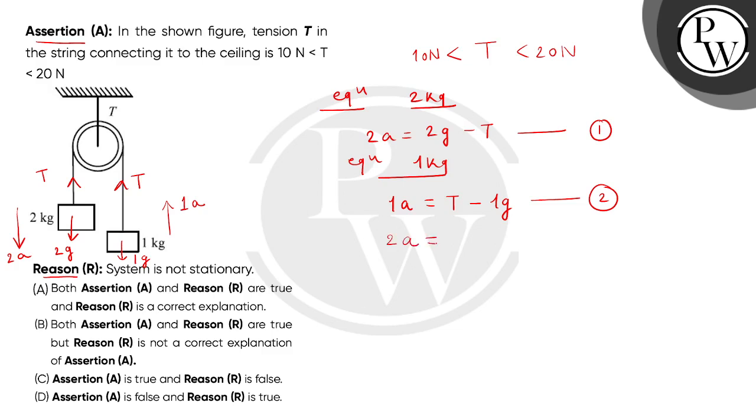So this becomes 2a equals to 2T minus 2g, this becomes equation number 3. Now let's add equation 1 and equation 3 because we have to find tension.